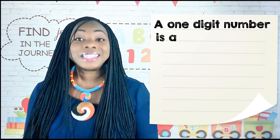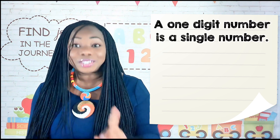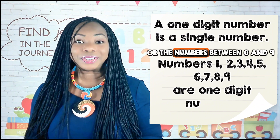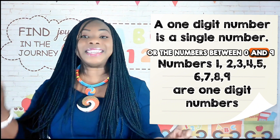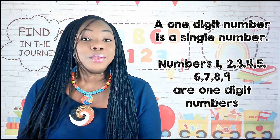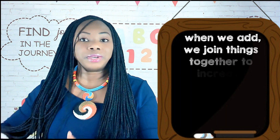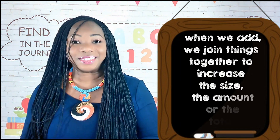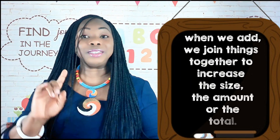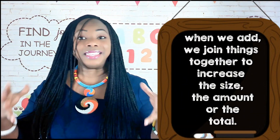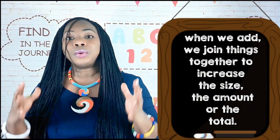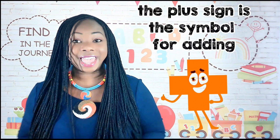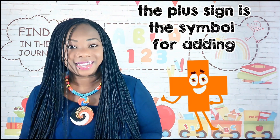A one-digit number is a single number, or the numbers between zero and nine. When we add, we join things together to increase the size, the amount, or the total. The symbol for adding is the plus sign.